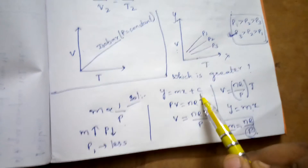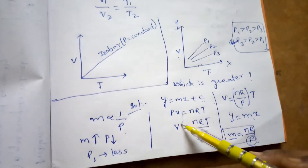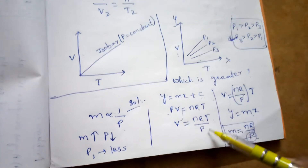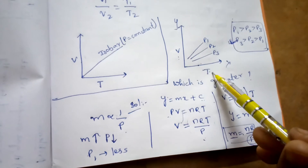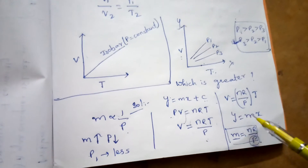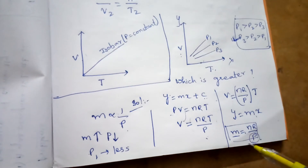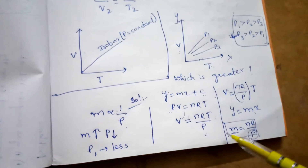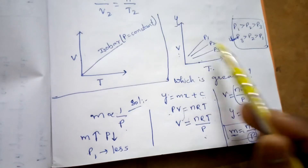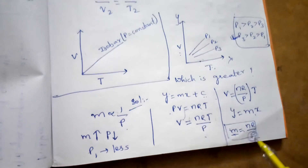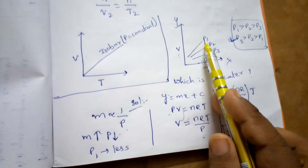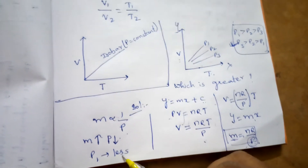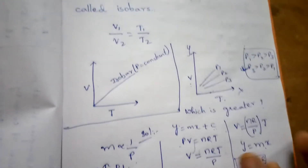To summarize: from PV = nRT, rearranging gives V = (nR/P) × T, which is in the form y = mx. The slope m = nR/P, so slope and pressure are inversely proportional. If slope increases, pressure decreases. For P1 the slope is more, so P1 is less.